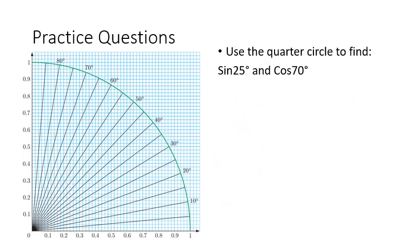What I'd like you to do now is I'd like you to have a go at some practice questions using the quarter unit circle to find sine 25 and cosine 70. Once you think you found those, please continue the video and we'll see how you went.